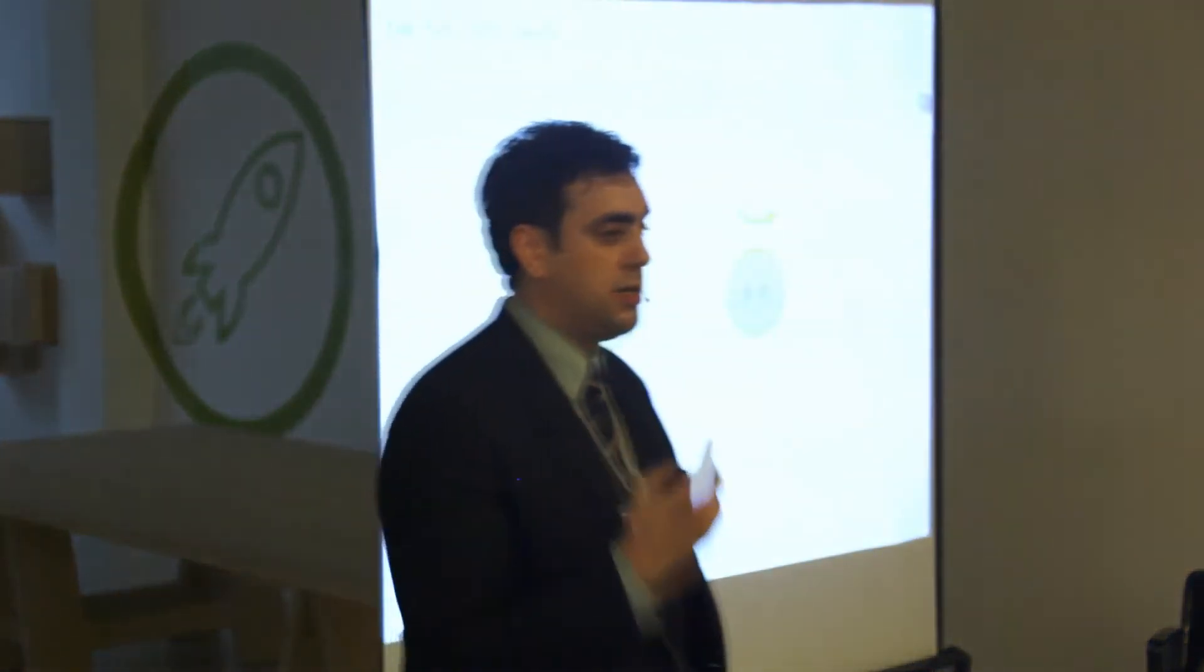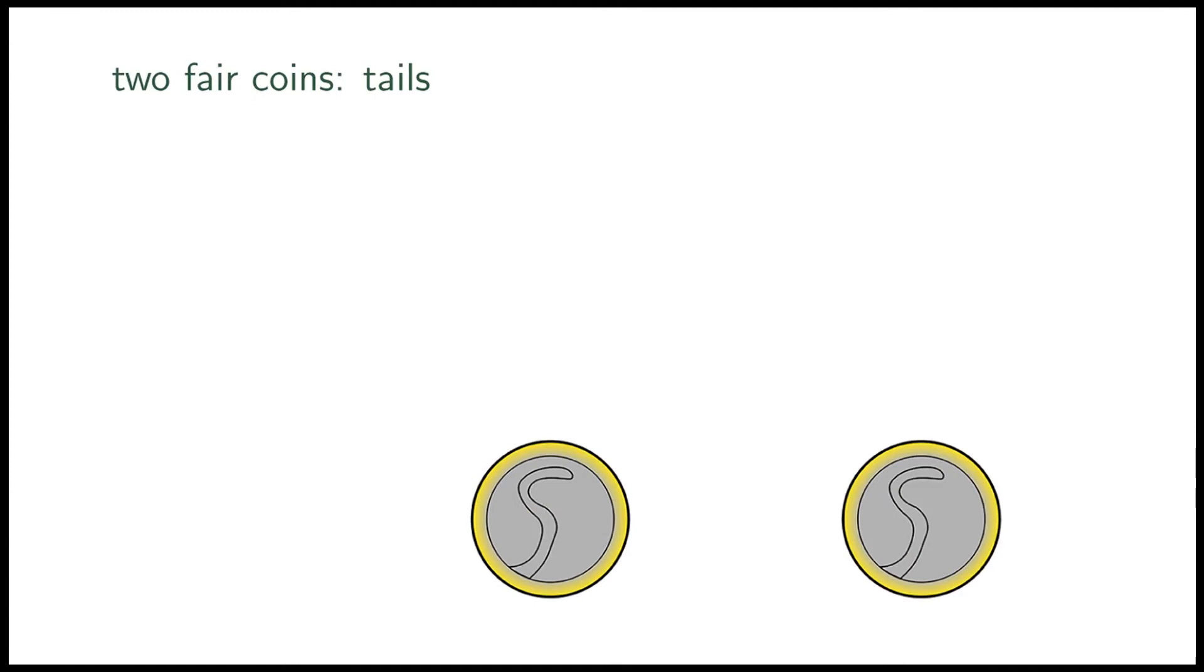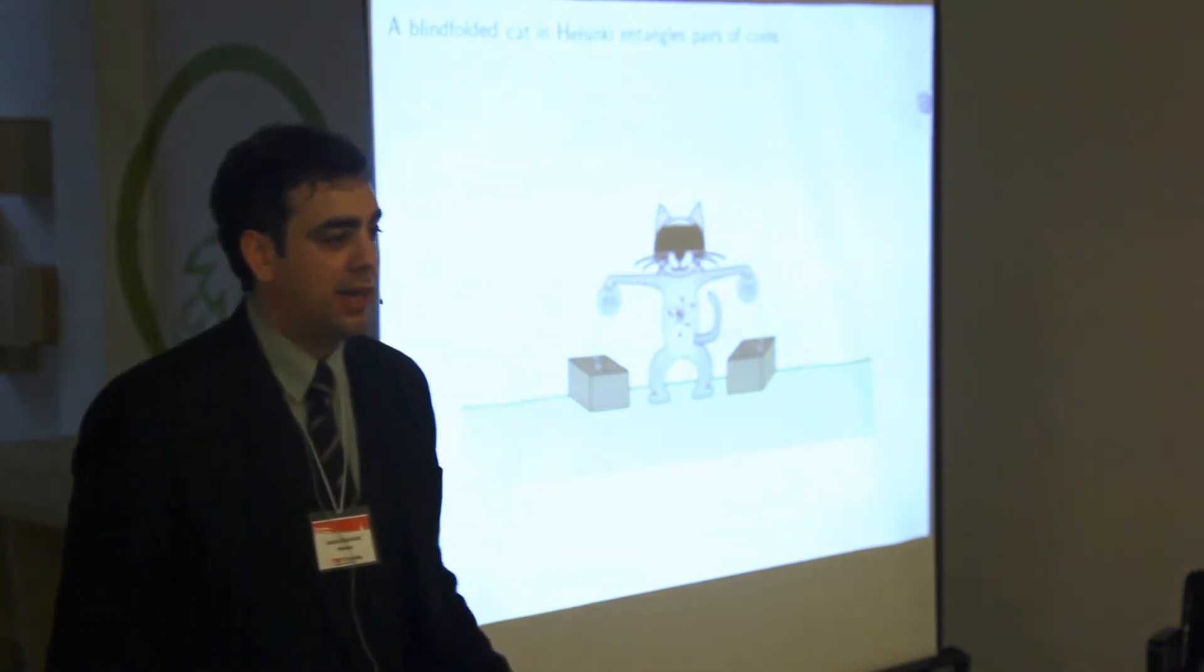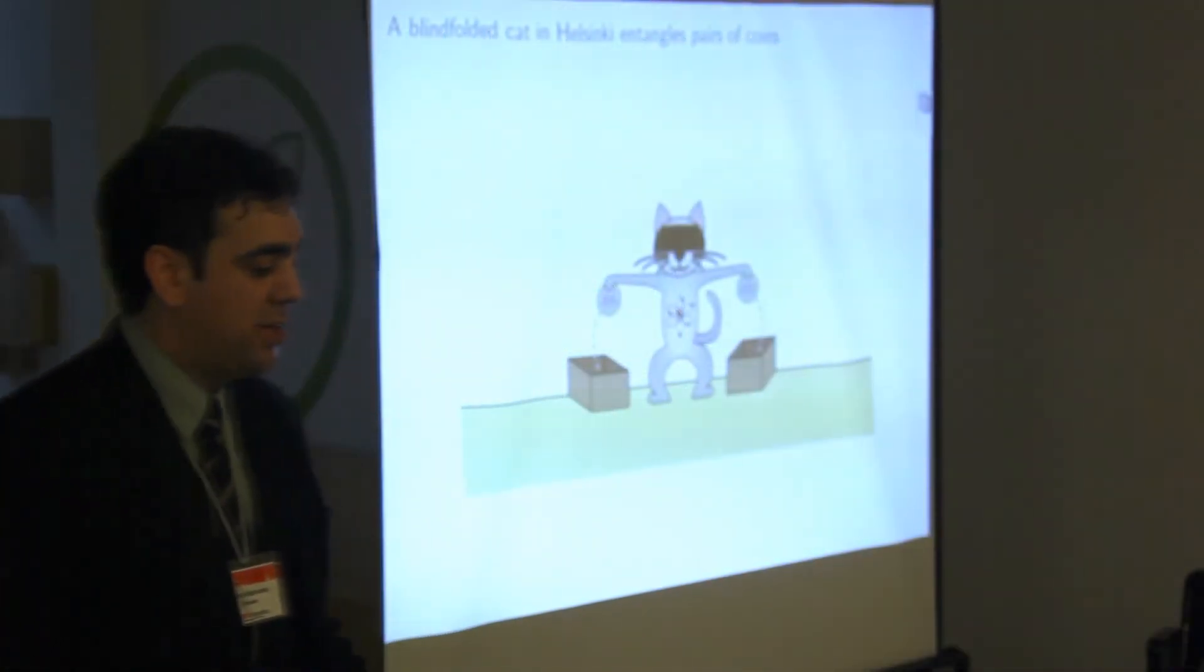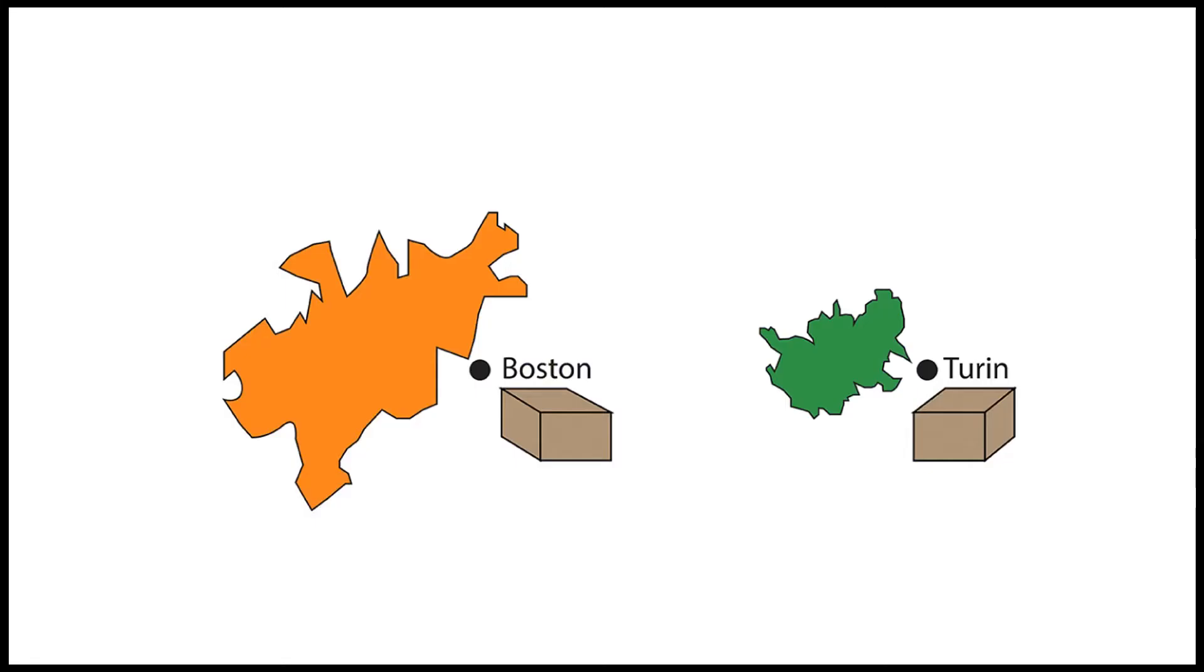The first ingredient is a pair of fair coins. On one side, of course, there's heads. And just as you'd expect, on the other side, tails. The second ingredient is a cat, which is blindfolded and located in Helsinki. The cat rubs the quarters together to entangle them and drops them in the boxes. Then the boxes are closed and shipped. One goes here to Torino and the other to Boston. And we have friends there.